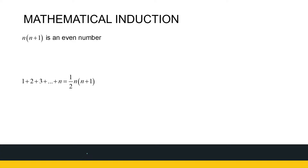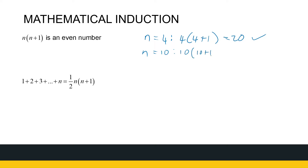If I look at n times n plus 1 is an even number, let's just test a couple. If n equals 4, then 4 times 4 plus 1 gives me 4 times 5, which is 20 — an even number. If n equals 10, then 10 times 11 is 110, also an even number. Now I've shown it for two natural numbers, but there's an infinite number of natural numbers, so I cannot show this for all of them. We're investigating how to prove it for all natural numbers without checking each one.